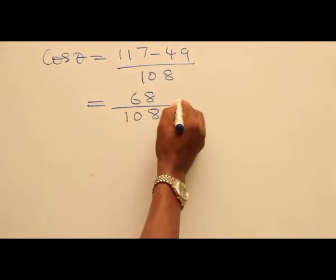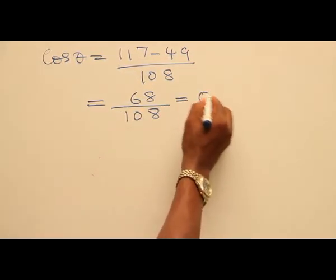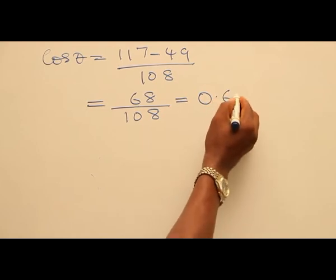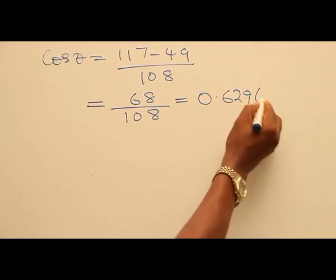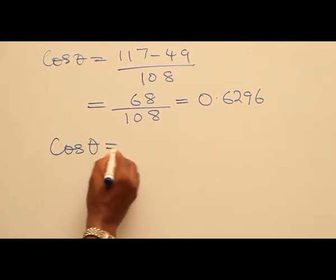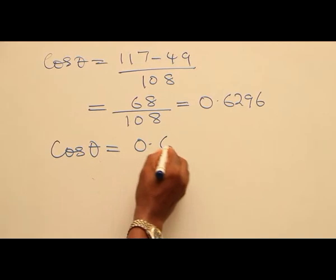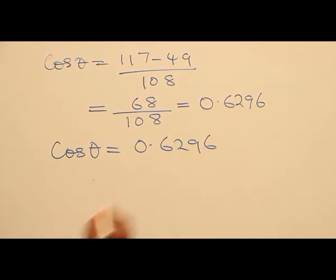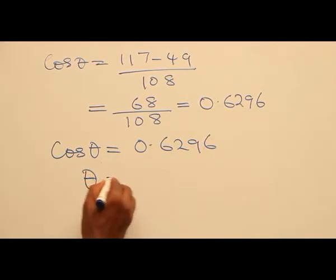You now divide 68 by 108 to give you 0.6296. You can use your calculator to divide it. So now we have cos θ equals 0.6296. Now we're looking for theta, which is inverse cosine.